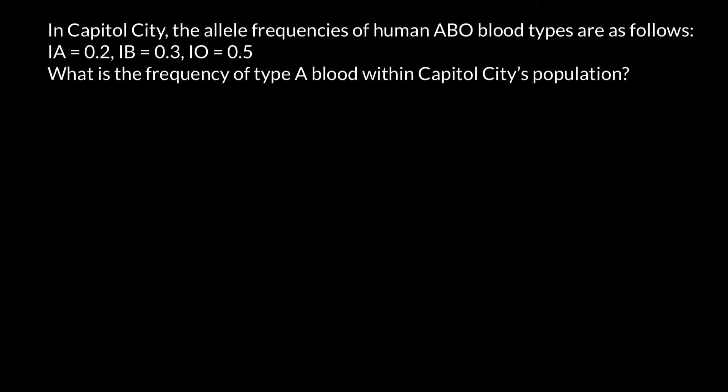Here's the problem. In capital city, the allele frequencies of human ABO blood types are as follows: allele A equals 0.2, allele B equals 0.3, allele O is 0.5. These frequencies combined make one or one hundred percent. What is the frequency of the blood group A within capital city's population?